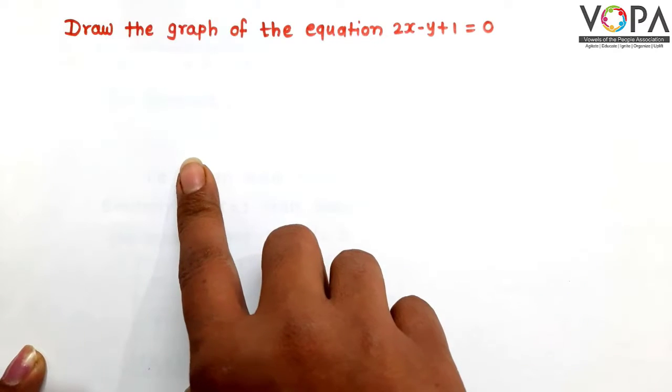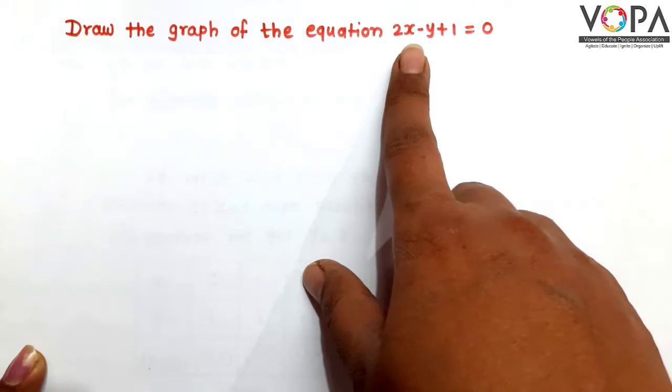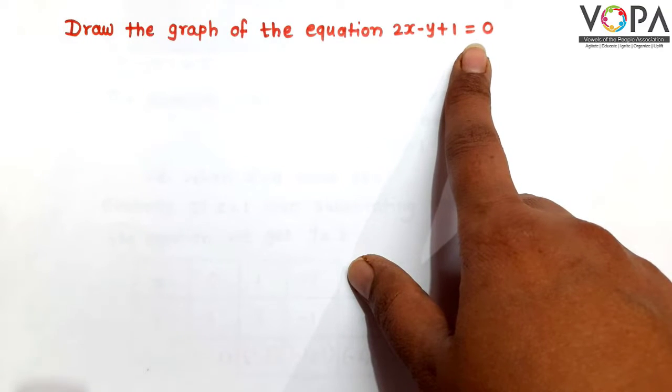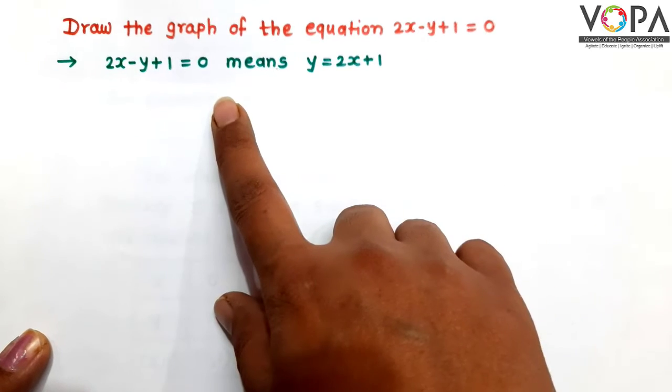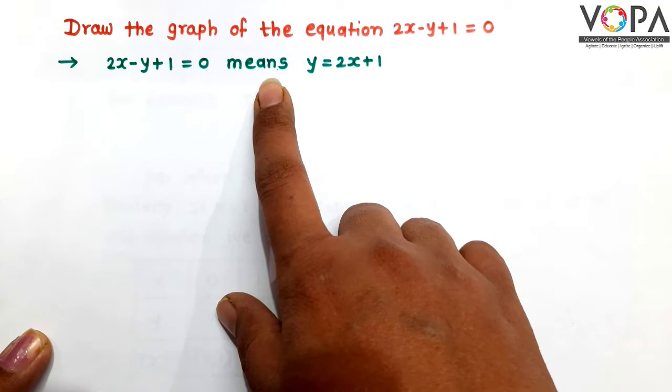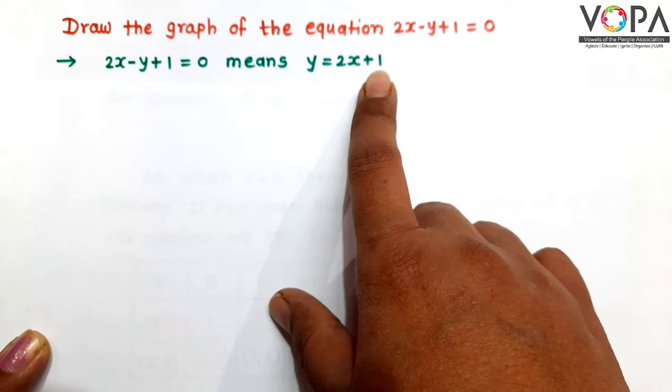In this example, we draw the graph of equation 2x minus y plus 1 equal to 0. 2x minus y plus 1 equal to 0 means y is equal to 2x plus 1.